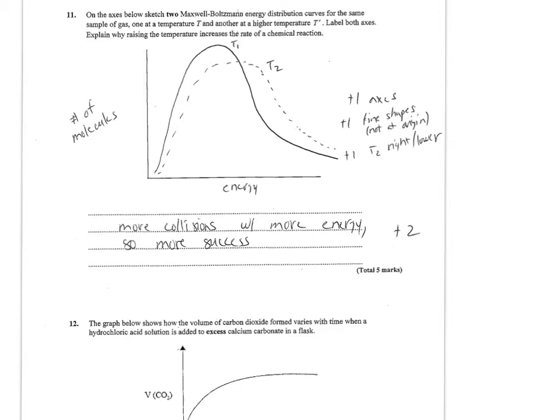Number 11: sketch two Maxwell-Boltzmann energy distribution curves for the same sample of gas, one at temperature T and one at the higher temperature T prime. I labeled mine T1 and T2. Label both axes.